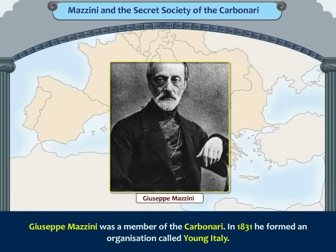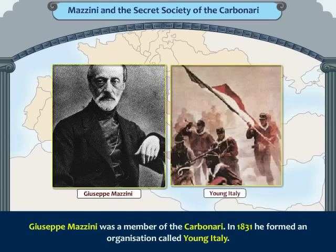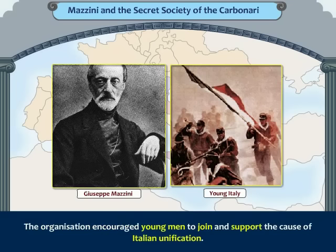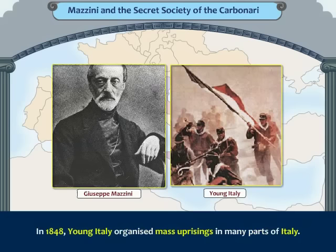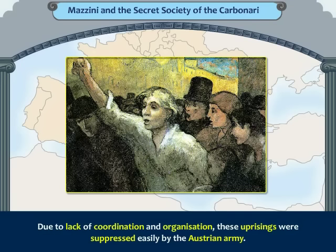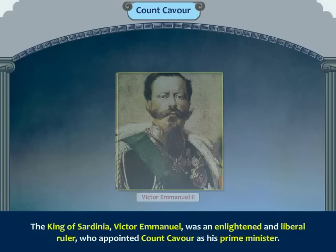Giuseppe Mazzini was a member of the Carbonari. In 1831, he formed an organization called Young Italy. Its aim was the independence and unification of Italy and the subsequent establishment of a republic. The organization encouraged young men to join and support the cause of Italian unification. In 1848, Young Italy organized mass uprisings in many parts of Italy, but due to lack of coordination and organization, these uprisings were suppressed easily by the Austrian army.